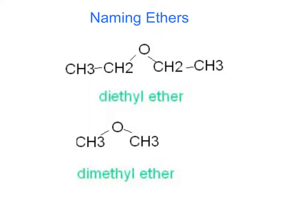When naming ethers we can look at simple ethers or more complex ethers. Simple ethers are named by identifying the two organic substituents and adding the word ether. So we would name each chain followed by the word ether — for example, ethyl ethyl ether or diethyl ether, or dimethyl ether. If the chains have different lengths, remember we always go by alphabetical order for which name comes first.